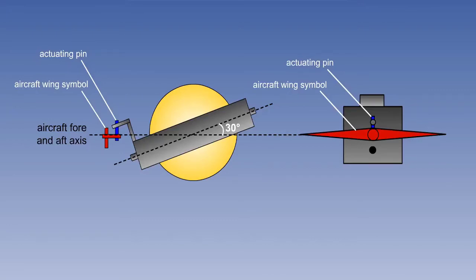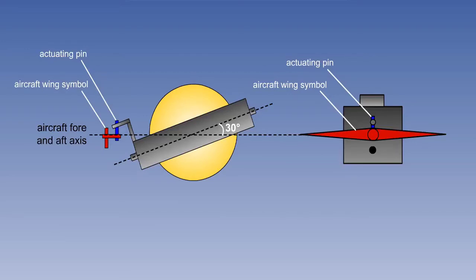The principle of operation is much the same as the turn indicator, but because the turn coordinator is sensitive to bank as well as to yaw, it responds quickly to the initiation and completion of a turn and to any change in the rate of turn. Looking at the example of a typical instrument display shown here, we can see that the slip indicator is the same as the one incorporated into the face of the turn indicator.